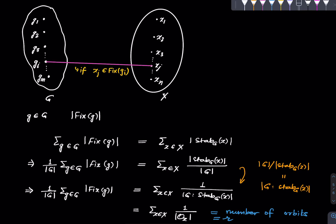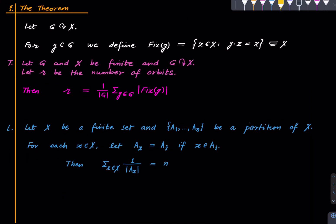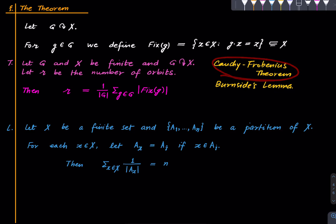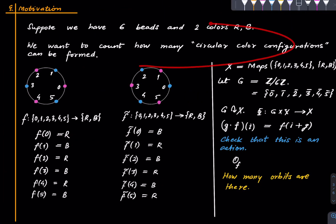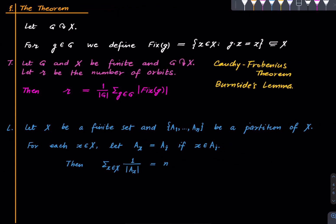The total number of orbits is this quantity, and this is called the Cauchy-Frobenius theorem — but mostly it is referred to as Burnside's Lemma. What happened was Burnside wrote an article in which he mentioned this theorem and attributed it to Cauchy and Frobenius, but somehow history ended up attributing it to Burnside himself. Sometimes people even call it 'the lemma that is not due to Burnside.' This is our main theorem; we will see applications next time. Thanks for listening and I will see you next time.